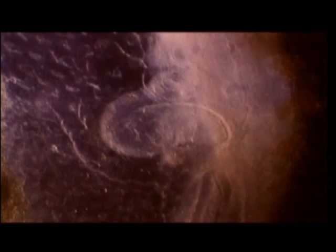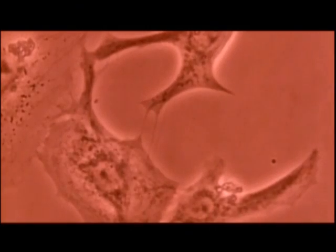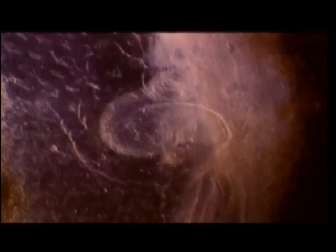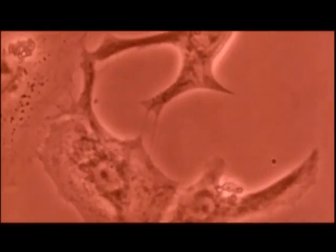This tiny movement sparks a chain reaction and other cells in the cluster pick up the rhythm. Incredibly, they all begin to beat in perfect unison. The new cells divide, dance to the same beat, and will grow to form the embryo's heart.